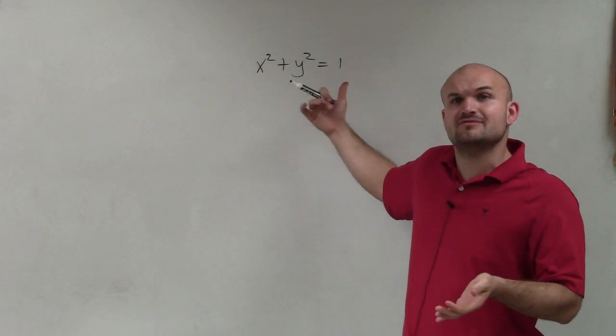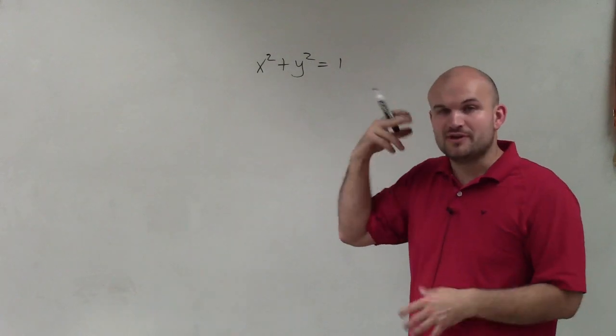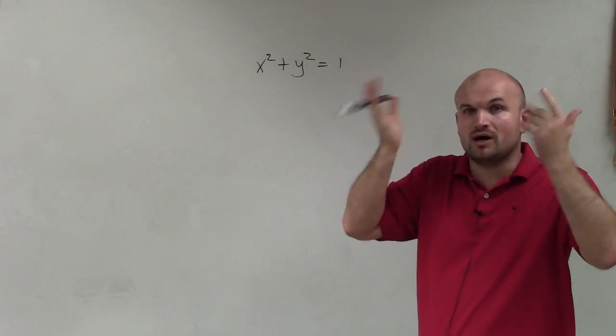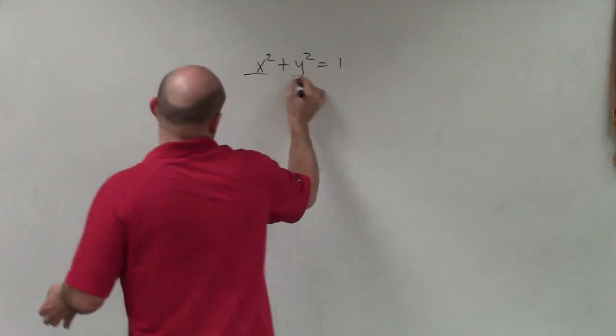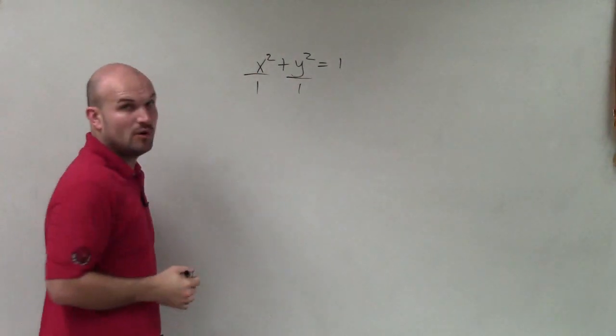And what I notice is I don't have anything divided by the x squared and the y squared. So therefore, I automatically start thinking, well, then those two numbers have to be the same. And therefore, if I was going to write them as fractions, they would have to be 1.